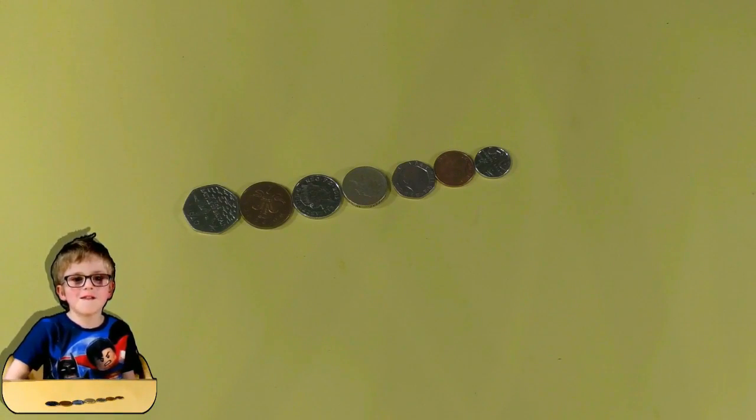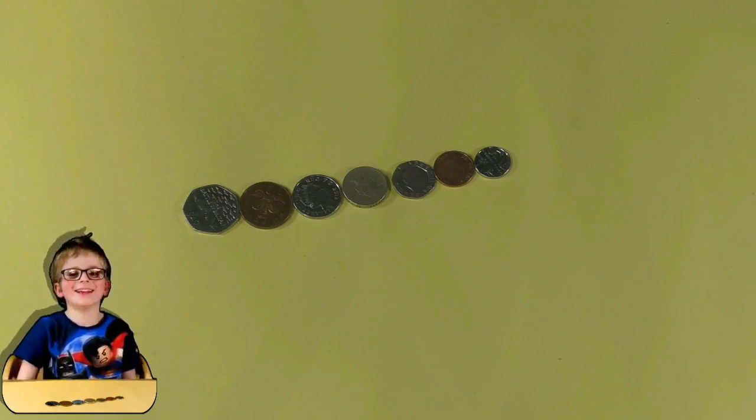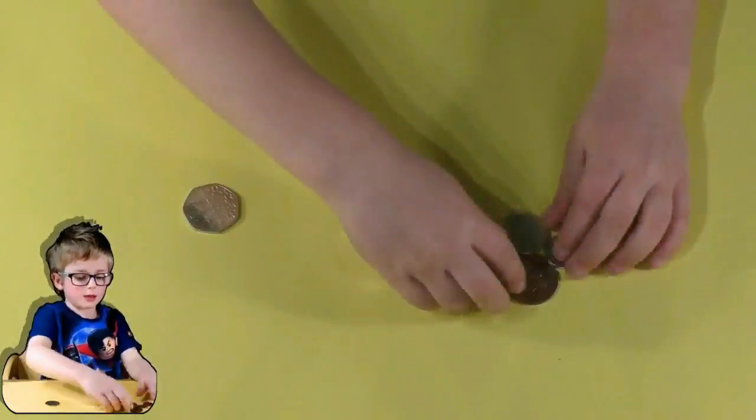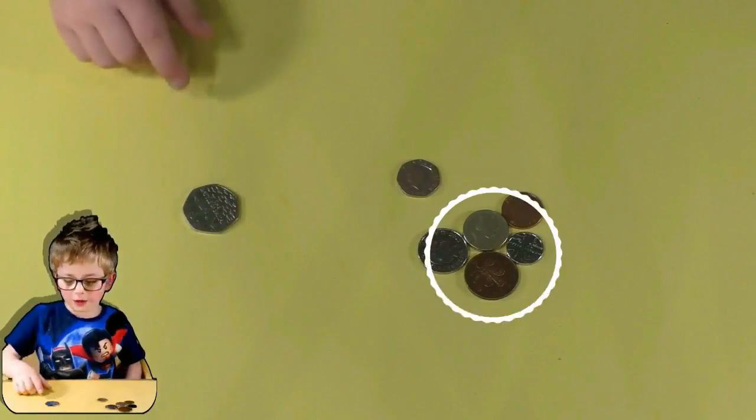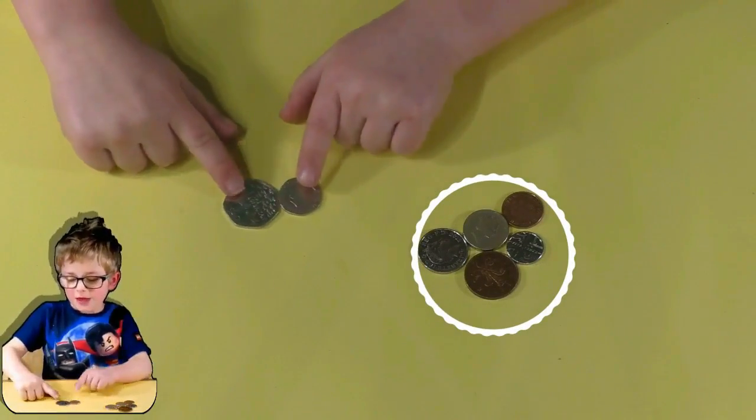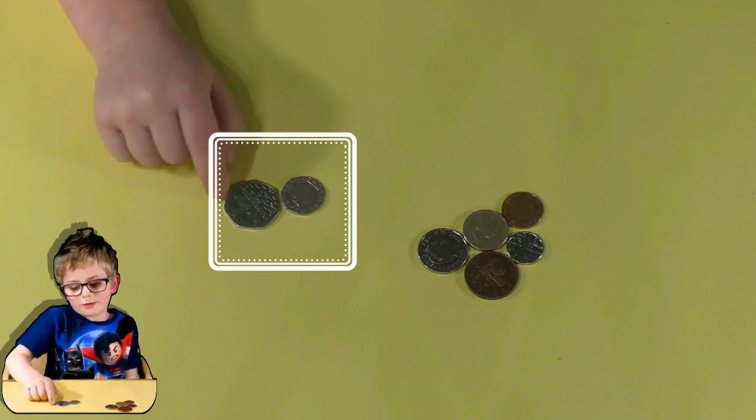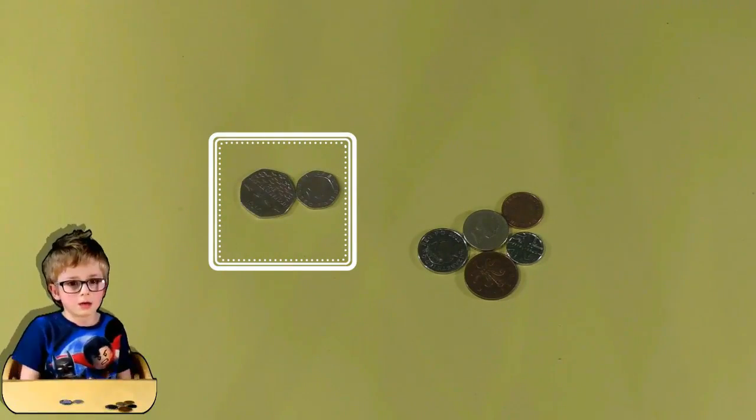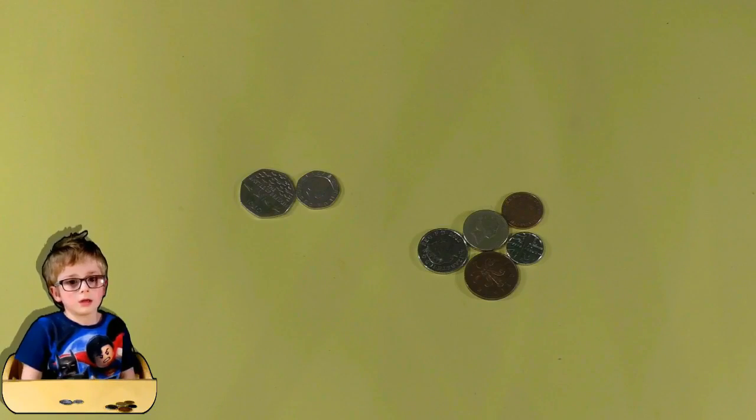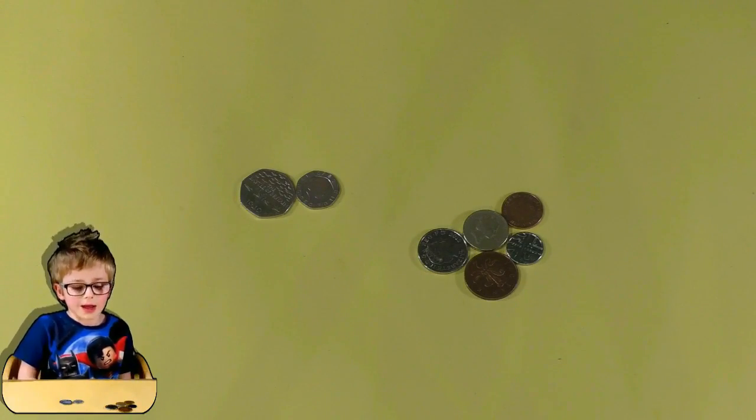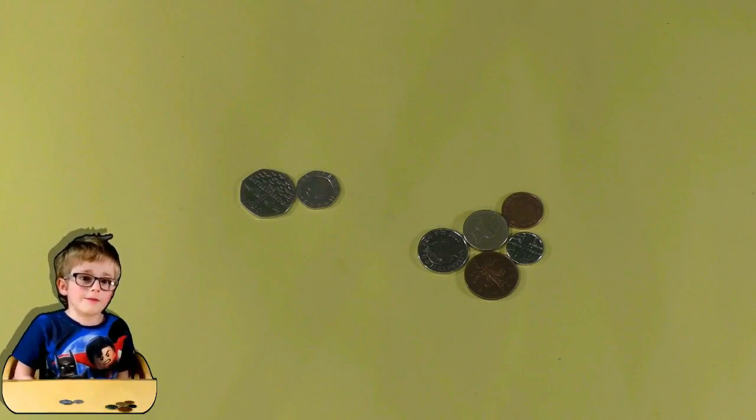So could you put the coins into groups for me? Okay, that's all the circles and this is all the lines around it. That's a good way of learning how to tell the difference between coins, isn't it? Yes. And there's another difference.